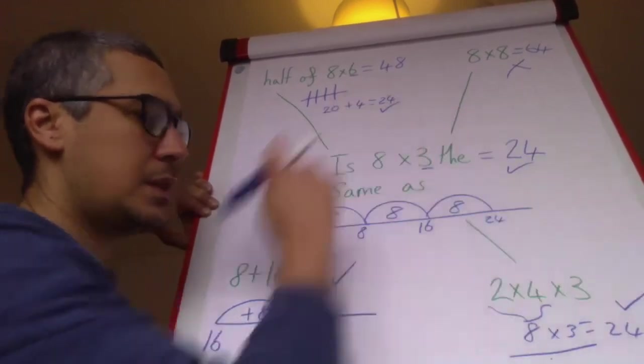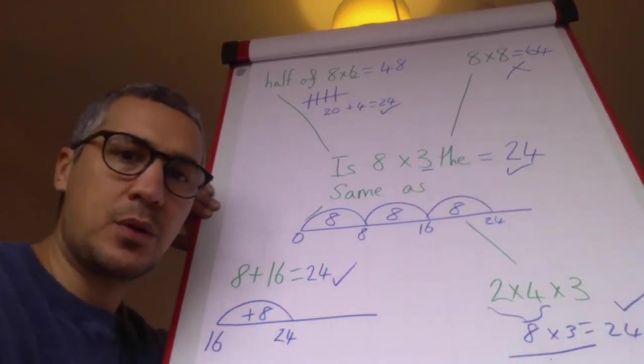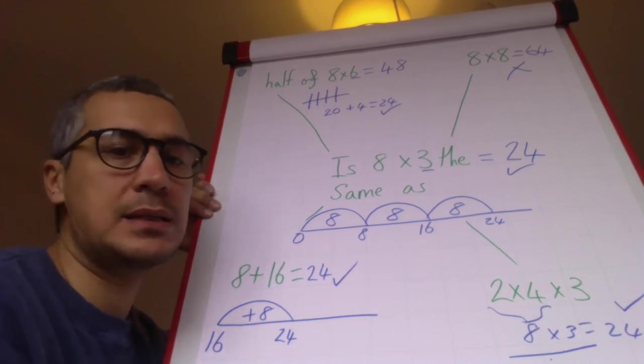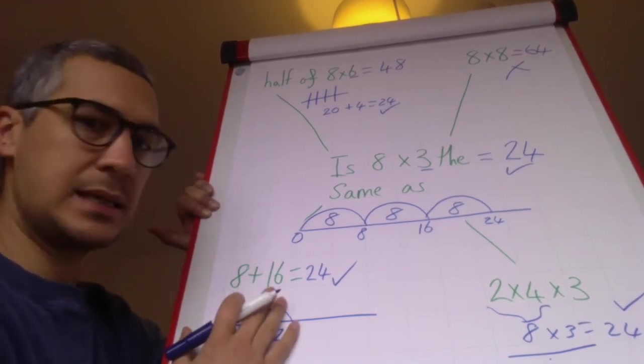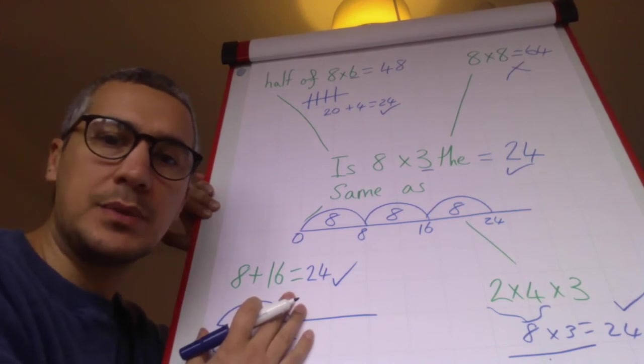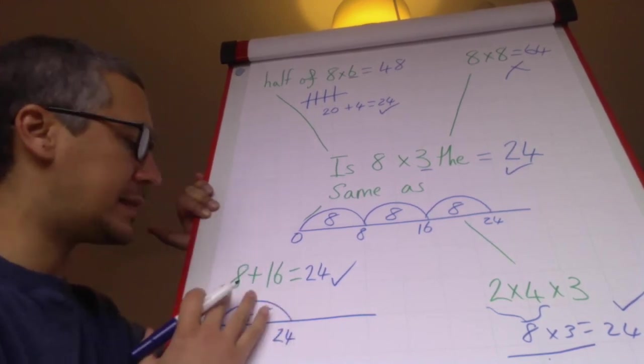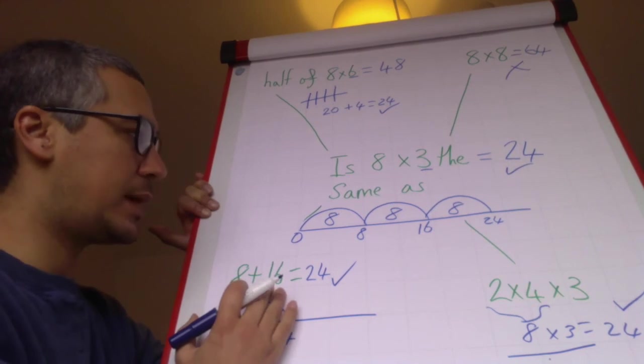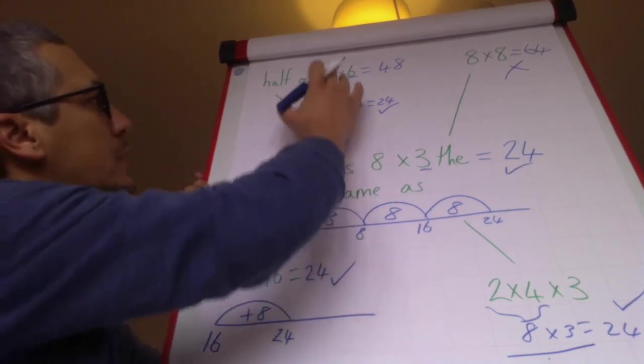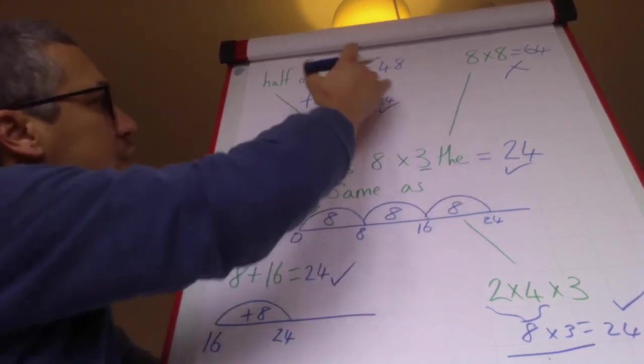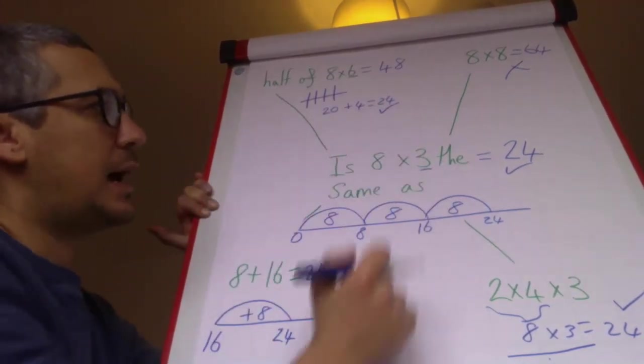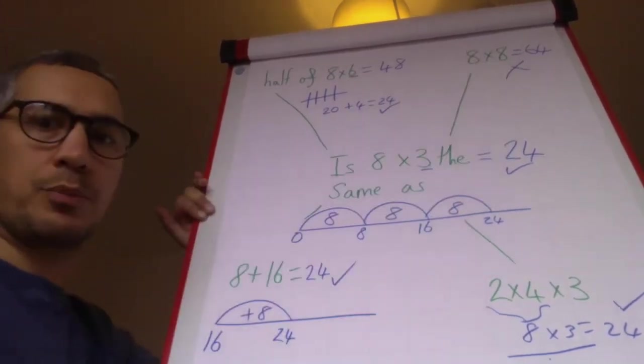If you want to be really fancy, you could write a couple of sentences. I know that eight add sixteen has to be the same as eight times three because there are three eights there—one eight and two eights in there. I know six and three have a relationship, so I know that's going to be right. And I know absolutely that one's wrong because eight is bigger than three.